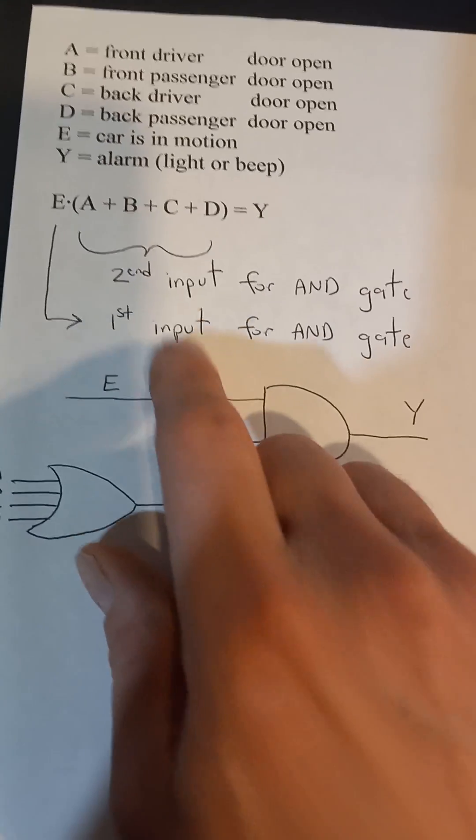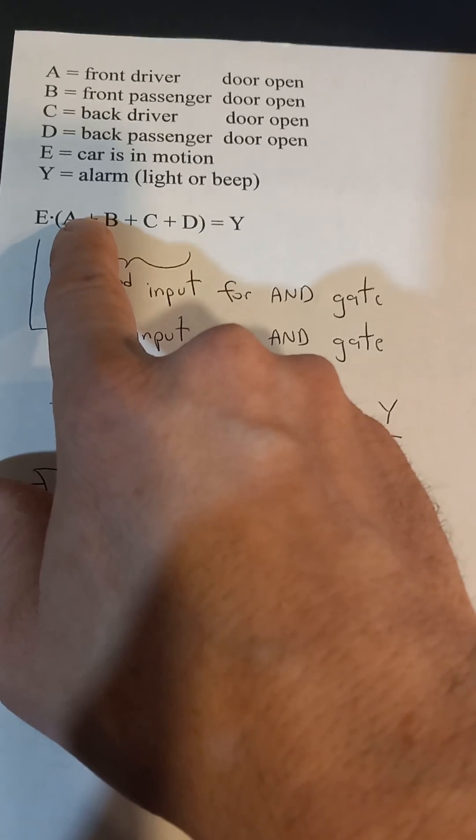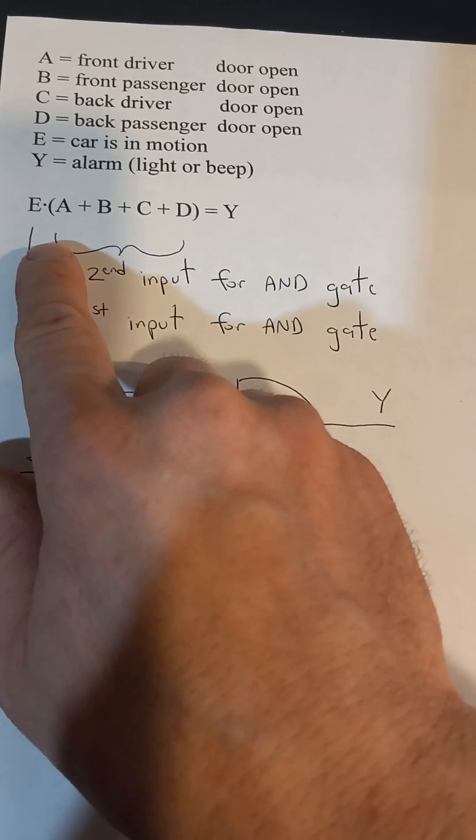So, if one of your doors is open and you're driving, you'll get a light or a beeping noise. So, it's basically a two-input AND gate.